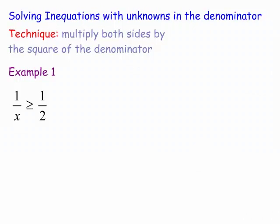Welcome to Maths with Bob. Today we're looking at solving inequations with unknowns in the denominator. The technique usually is just multiply both sides of the inequality by the square of the denominator because we know that's positive and hence we don't have to worry about flipping the sign.